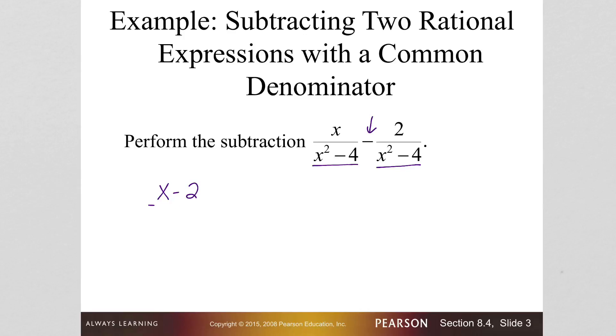Now they are not like terms, so I just rewrite them just like that. Now you always need to simplify if possible. So the numerator does not simplify, but the denominator can be factored into x plus 2, x minus 2. And now we can mark out like factors. That and that are identical. So that leaves us with 1 over x plus 2. There we go. We are simplified.